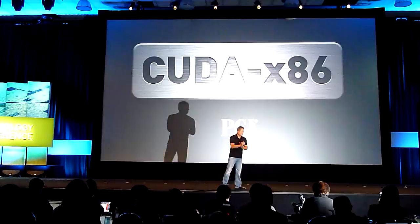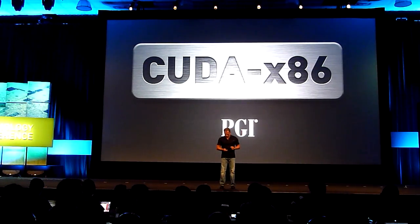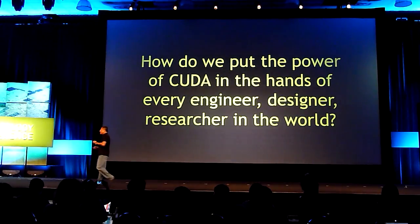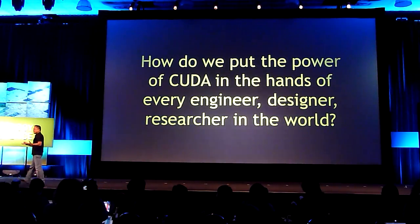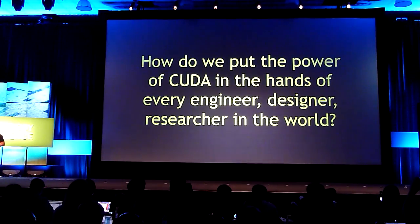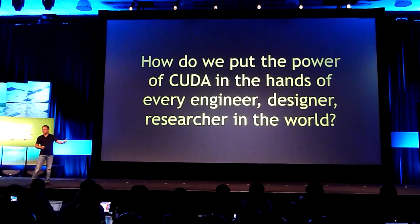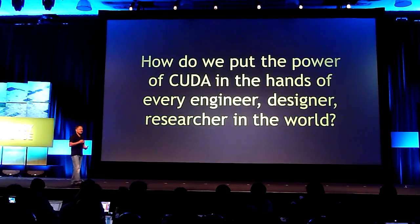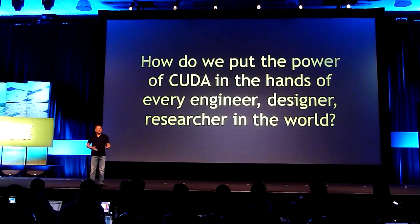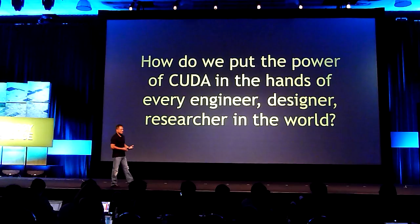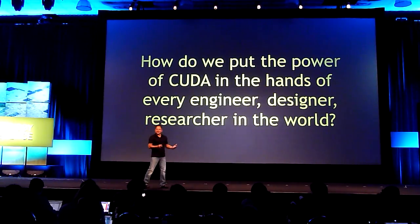A big round of applause for PGI. We've now put CUDA in the hands of every developer in the world. If you'd like to program CUDA, you can buy a PC anywhere from any PC company. If you'd like to deploy CUDA, you can deploy it on servers from every enterprise server company. What else can we do to put CUDA in the hands of researchers who would like the benefits of high-performance computing at their fingertips? At this point, you're really looking at killer apps — what are the types of applications that can really benefit all of you?